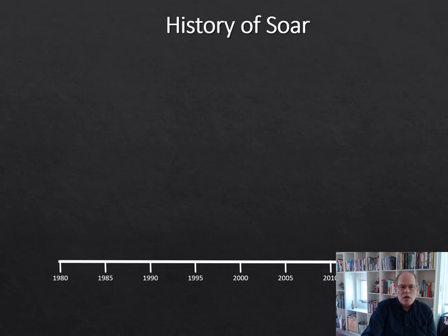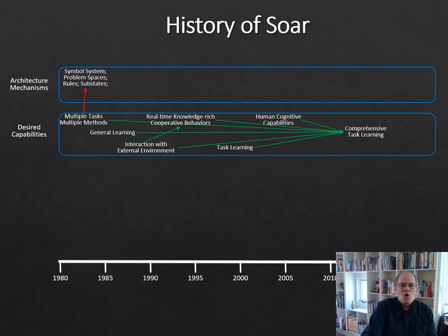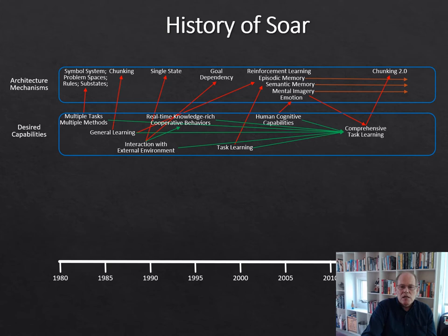Here's a short history of SOAR. We start back in the 1980s with desired capabilities: multiple tasks and multiple methods. We then wanted to add different general learning mechanisms, interacting with the environment, and supporting large knowledge-rich behaviors. We've added task learning, more human collaborative capabilities, and what we'll discuss shortly — comprehensive task learning. In terms of underlying mechanisms, we started with a symbolic system based on problem spaces and rule-based systems. In the mid-2000s we added many different memories and learning mechanisms, specifically reinforcement learning, episodic memory, semantic memory, mental imagery, and emotion components, along with a new implementation of the chunking mechanism.